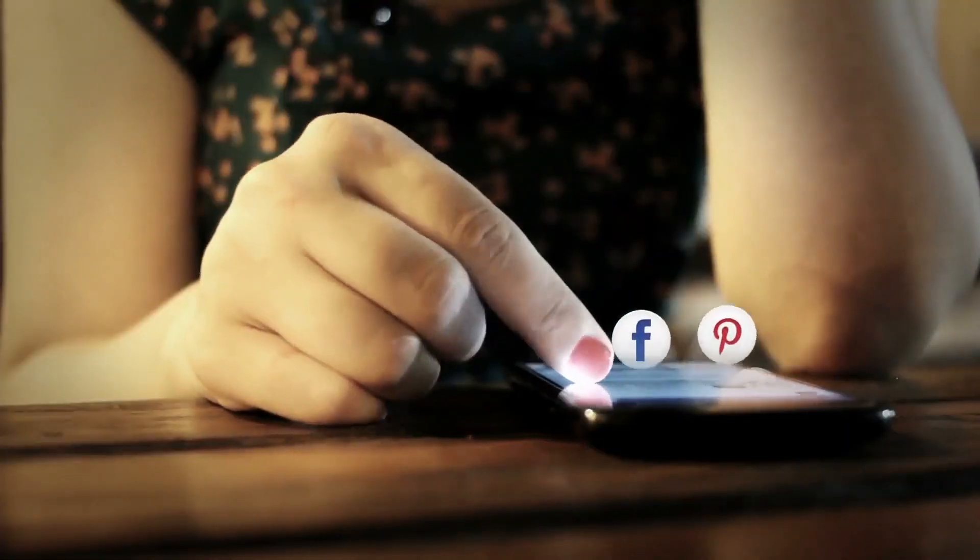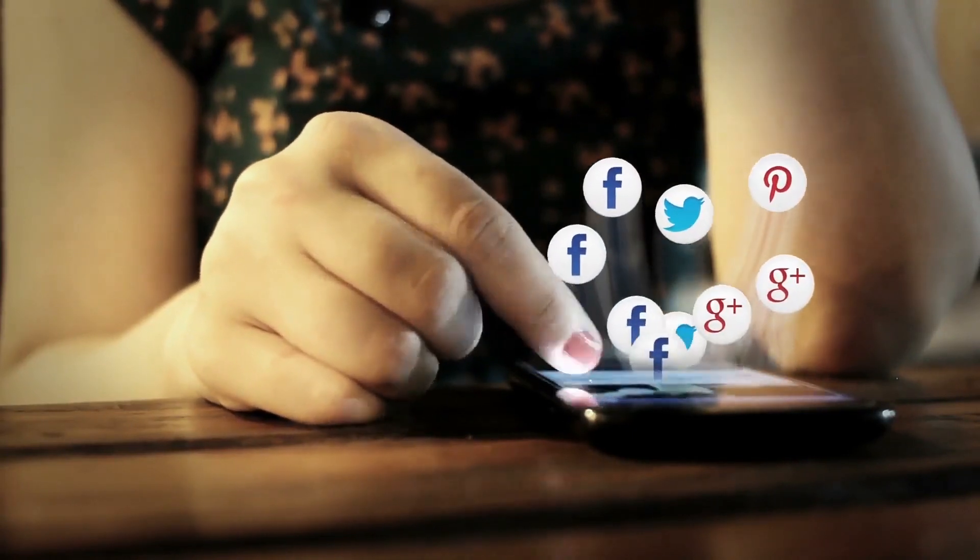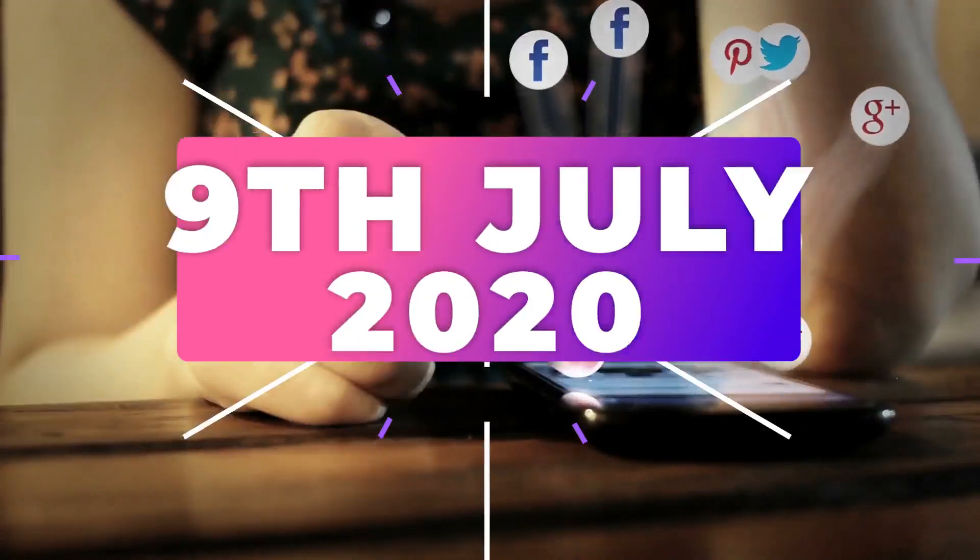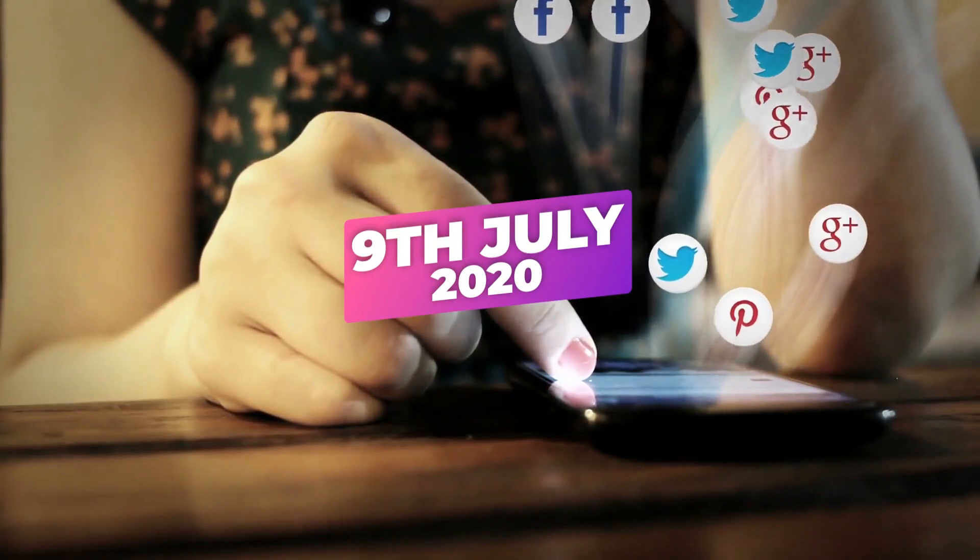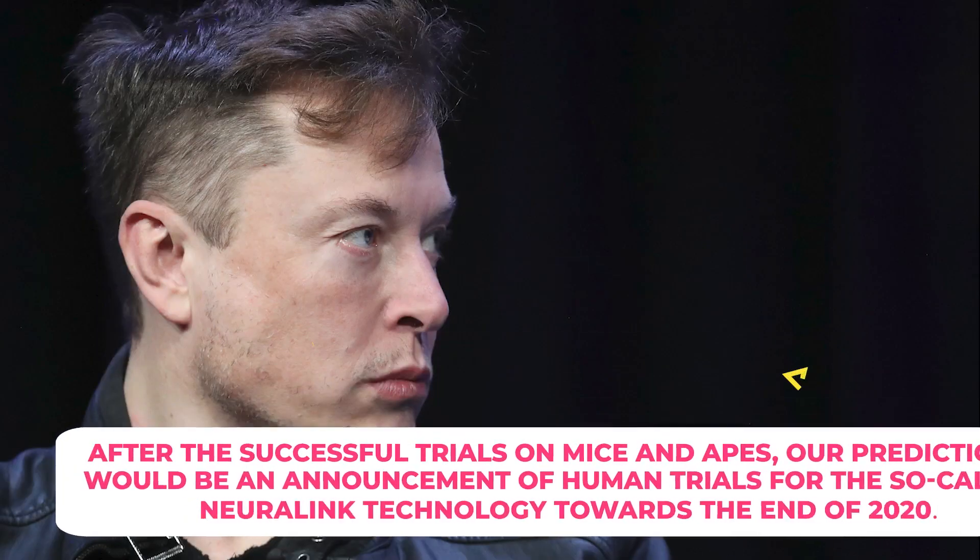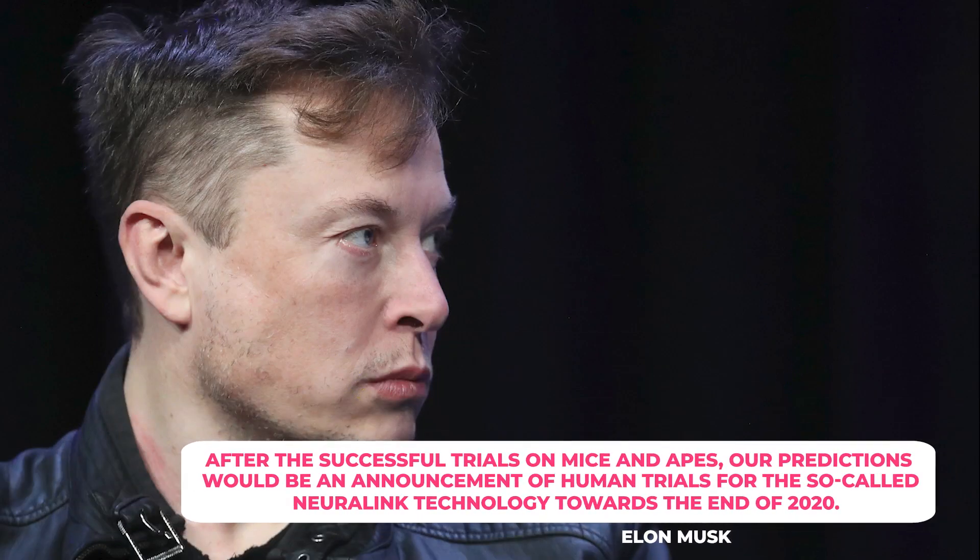Now that the prediction game has already started after Elon Musk's 9th of July 2020 tweet went viral, after successful trials on mice and apes, our predictions would be an announcement of human trials for the so-called Neuralink technology towards the end of 2020.